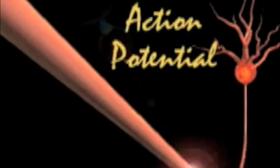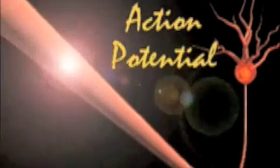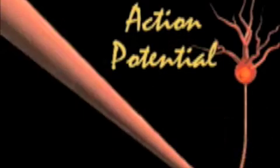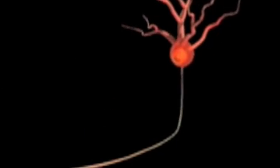The action potential, represented here as a bright light, originates from the axon hillock on the cell body. Once initiated, the action potential travels unchanged all the way from the axon hillock to the axon terminals.